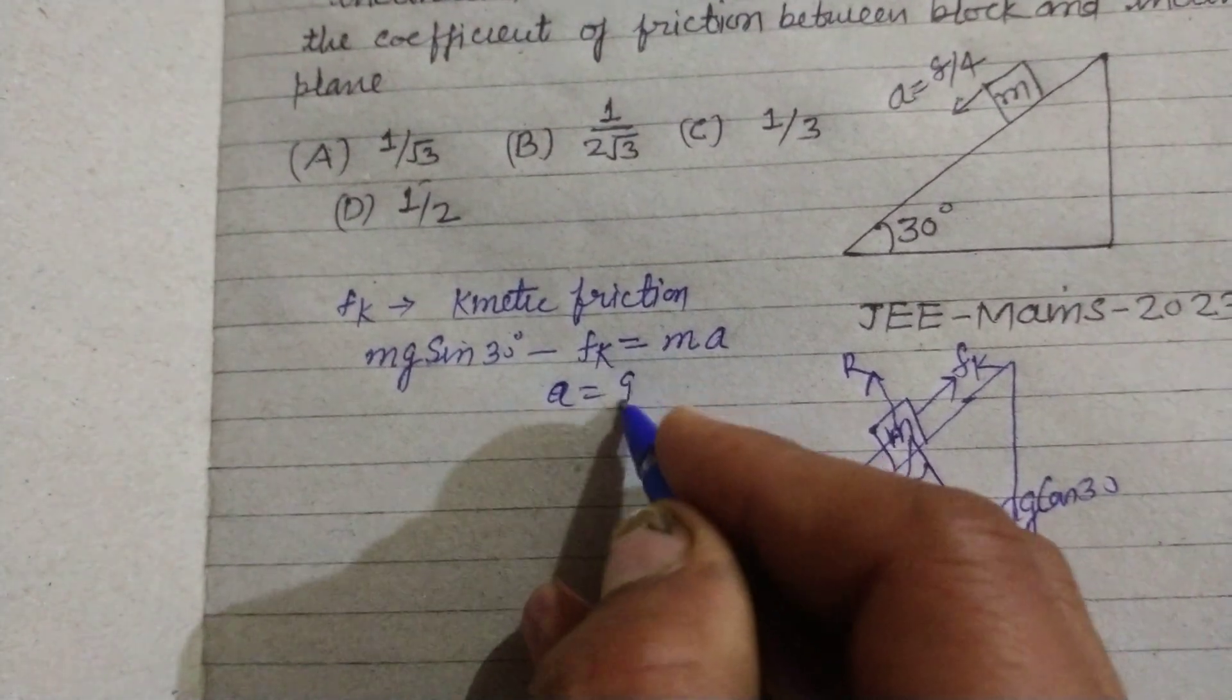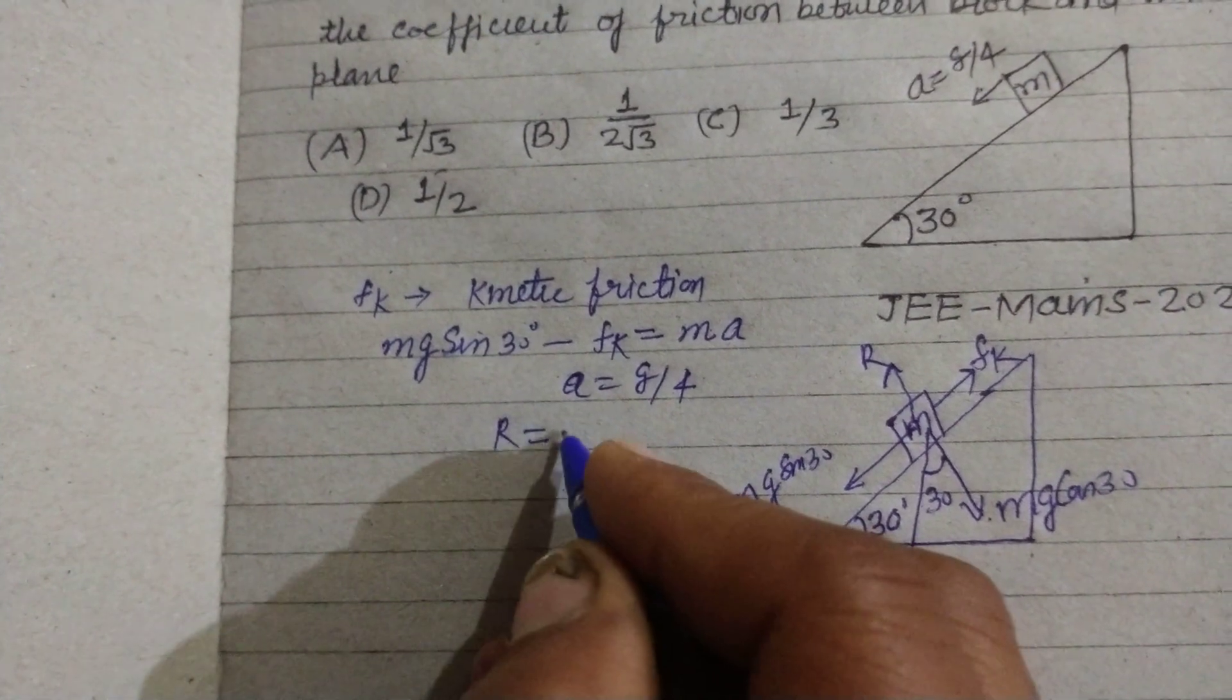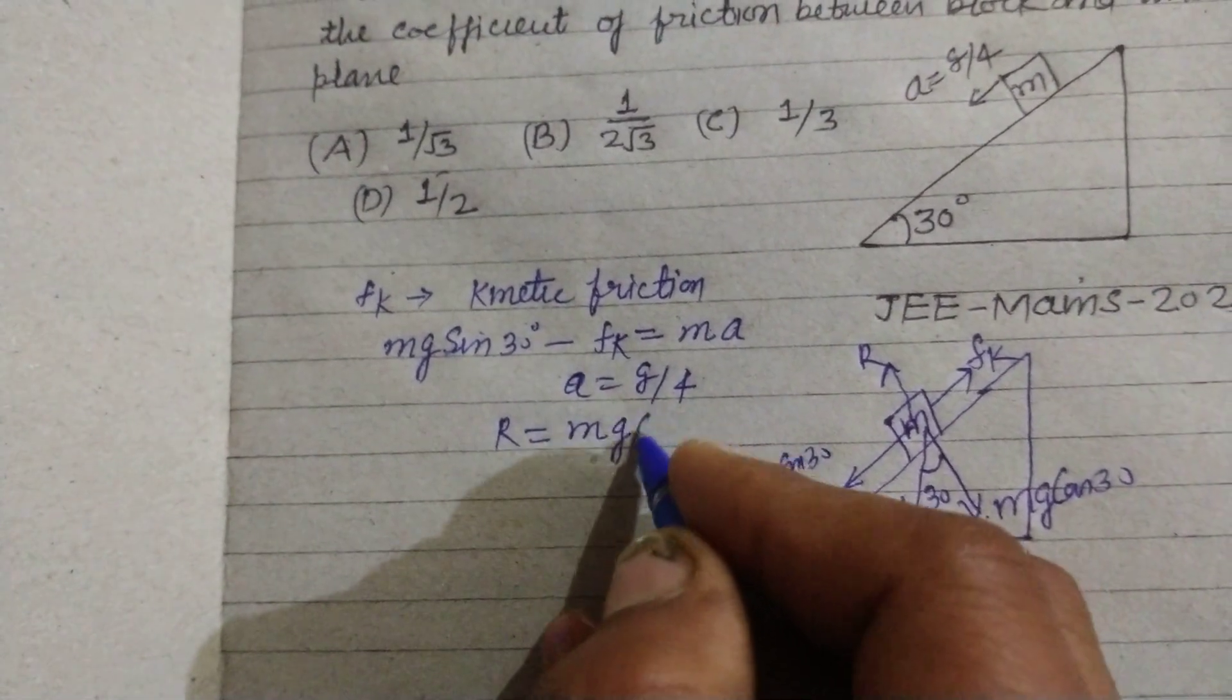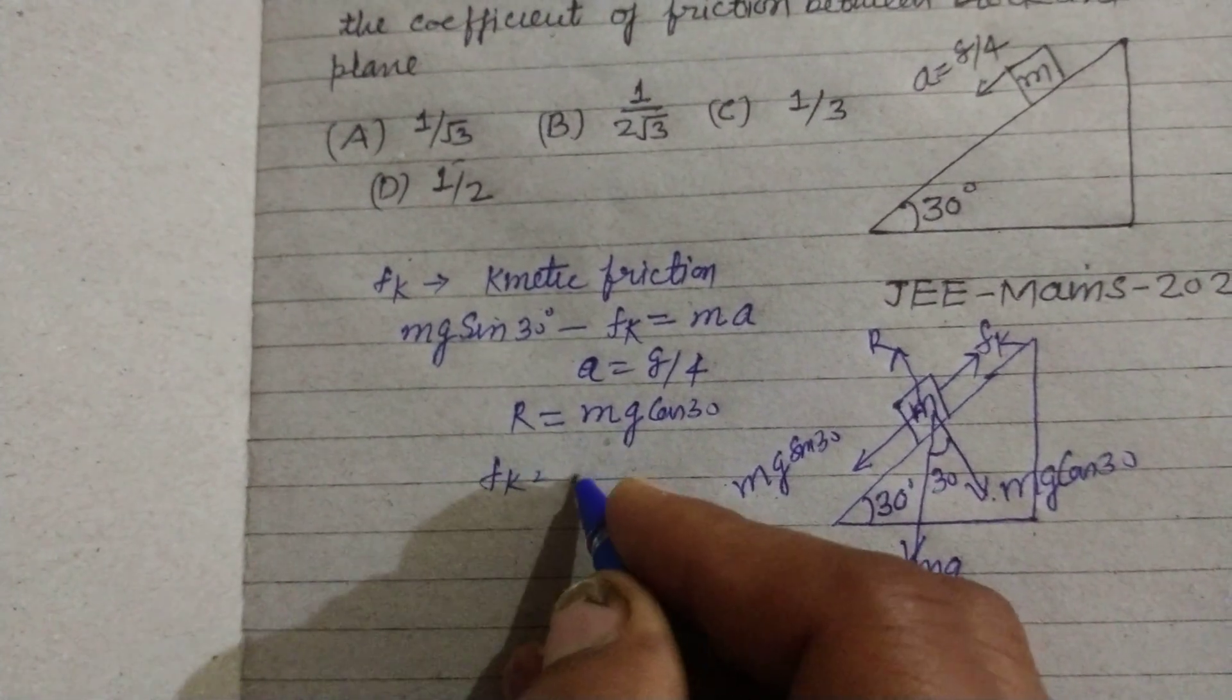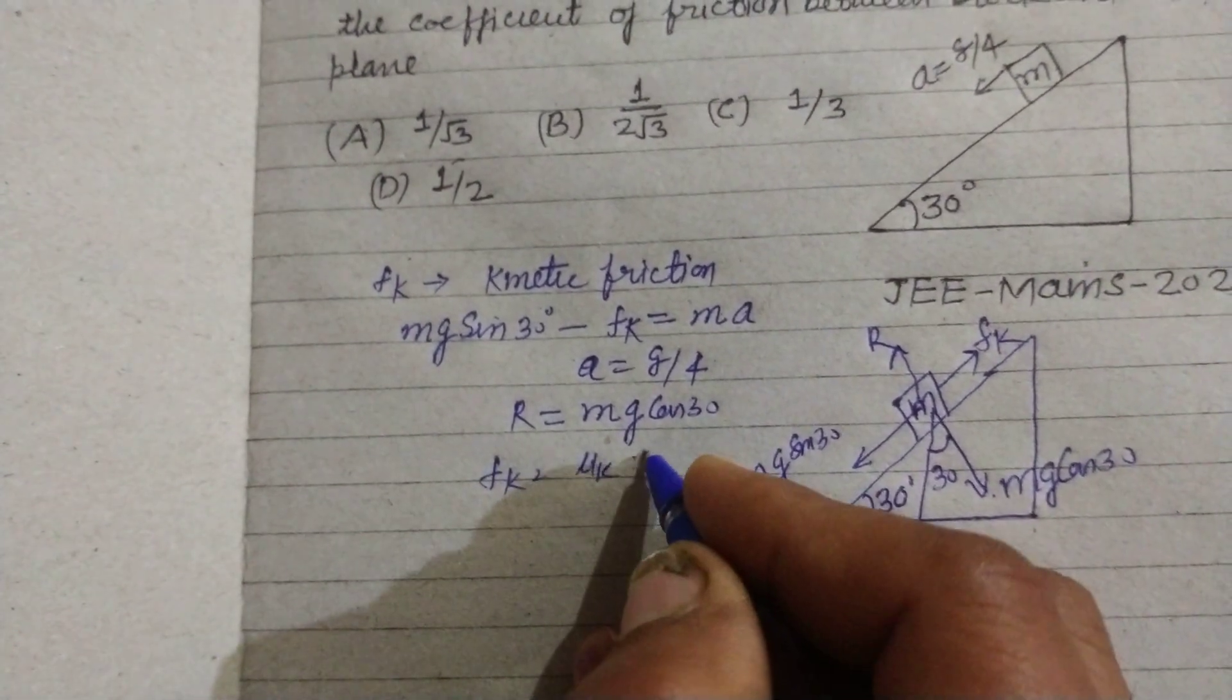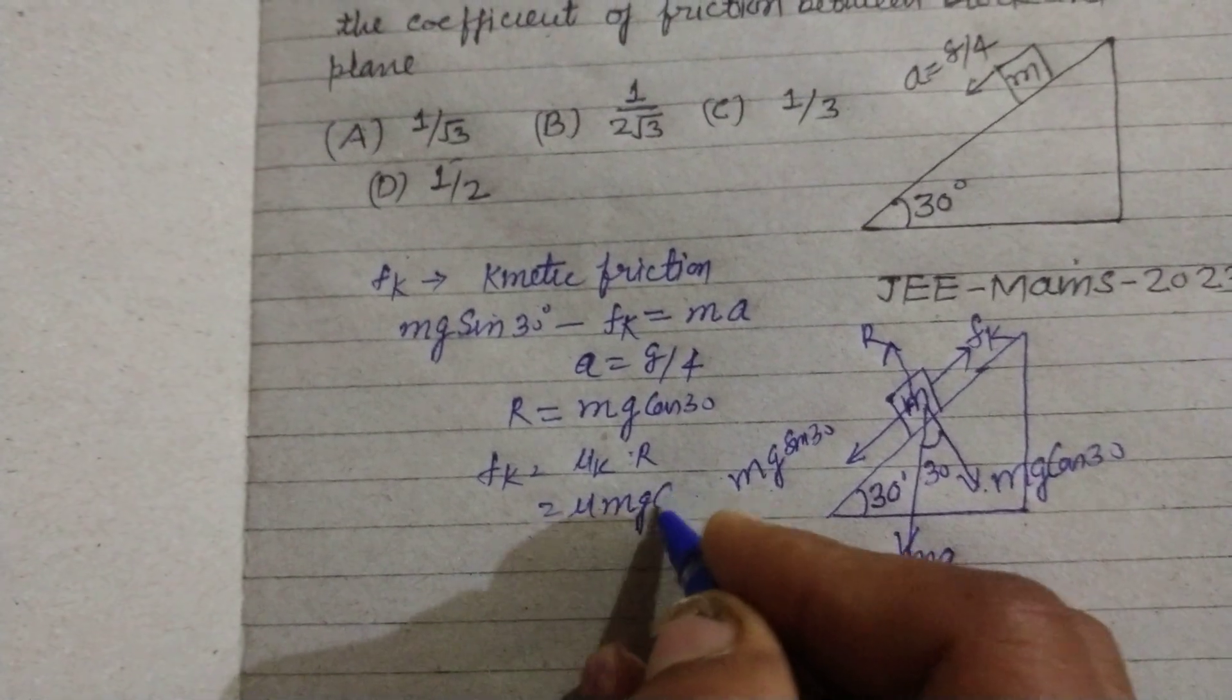So it is given to us g/4 and R equals mg cos 30°. And you know that Fk equals μR equals μ mg cos 30°.